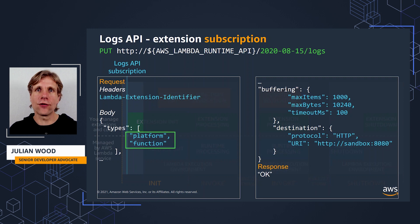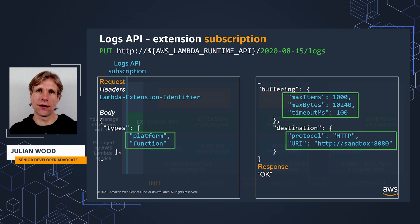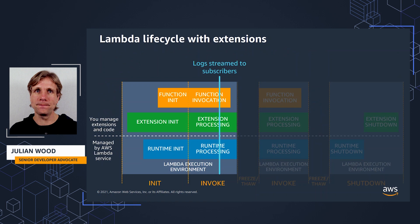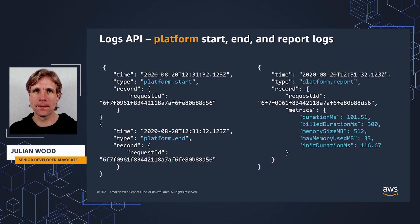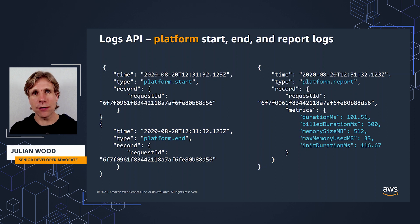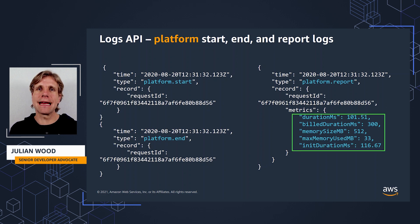In this example, the extension is subscribing to platform and function only. You also add the optional buffering configuration and then the destination protocol and address where the logs need to be sent. Sandbox resolves locally to the execution environment. The logs extension is now subscribed and Lambda starts to send any logs to the local endpoint, which can then process and filter them or send them to a preferred destination. Here are some example platform start, end, and report logs — the same information that you get in CloudWatch logs, showing the duration and memory metrics. The platform log also captures runtime or execution environment errors.